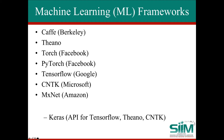Here are some of the available frameworks: Caffe, which was open sourced by Berkeley; Theano, which has been around for a long time; Torch, which Facebook uses quite a bit; PyTorch, also from Facebook; TensorFlow from Google; CNTK from Microsoft; and MXNet from Amazon. There are many more. There's also Keras, which is very popular — a deep learning API or library that can use TensorFlow, Theano, or CNTK on the back end.